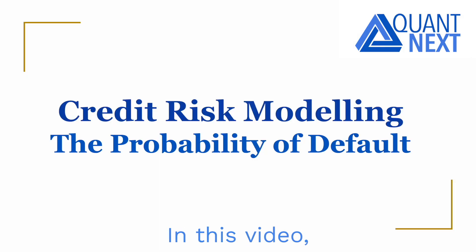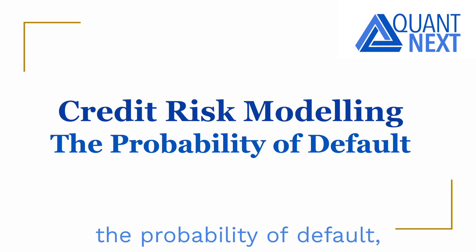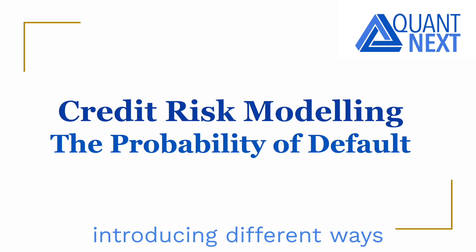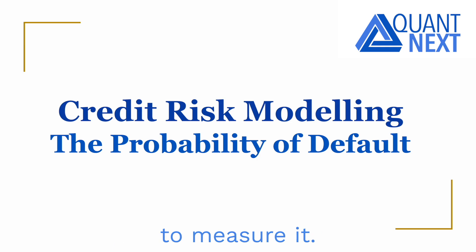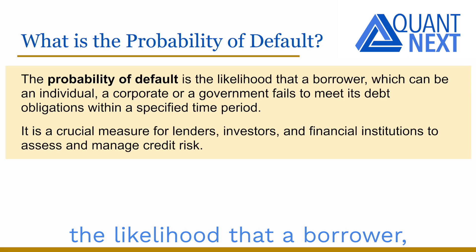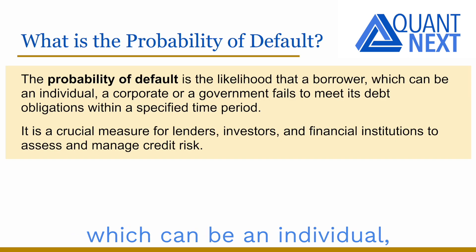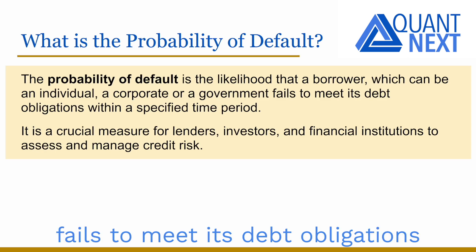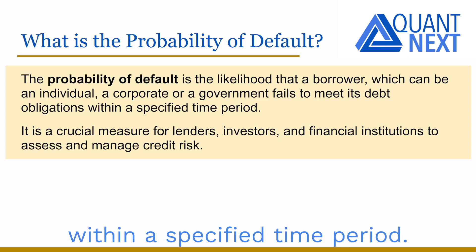Hi everyone. In this video we will focus on the probability of default, one of the key measures of credit risk, introducing different ways to measure it. The probability of default is the likelihood that a borrower, which can be an individual, a corporate, or a government, fails to meet its debt obligations within a specified time period.